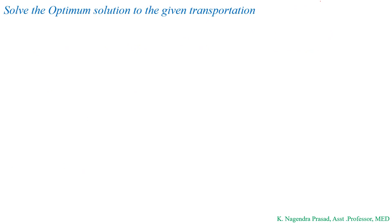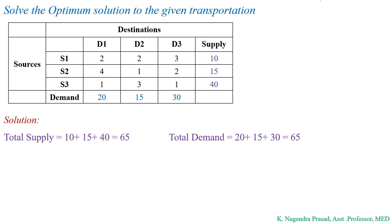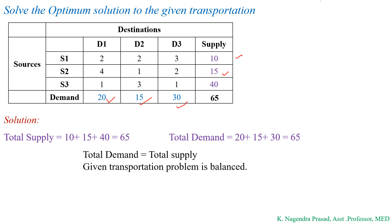Let us see one example problem: solve the optimum solution to the given transportation problem. Here, the number of sources is 3 — S1, S2, and S3 — and the number of destinations is 3 — D1, D2, and D3. The supply at each source and demand at each destination are also given. First, we check whether the given transportation problem is balanced or not. Total supply equals 10 plus 15 plus 40, that is 65. Total demand equals 20 plus 15 plus 30, which also equals 65. Since demand equals supply, the given transportation problem is balanced.